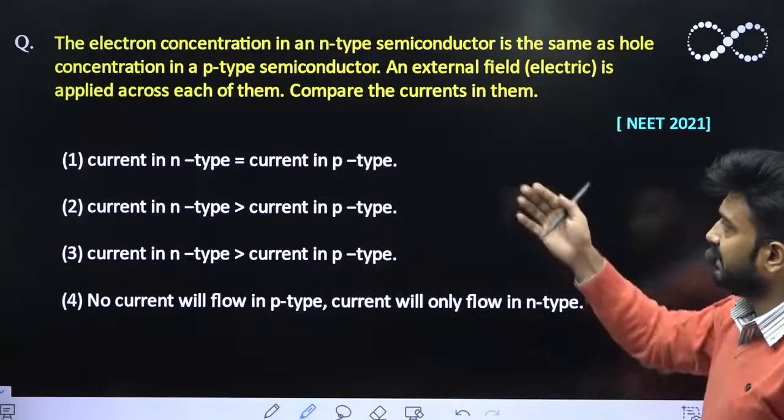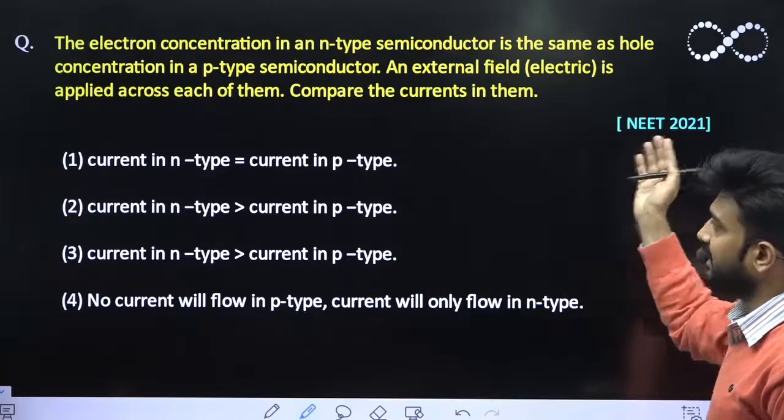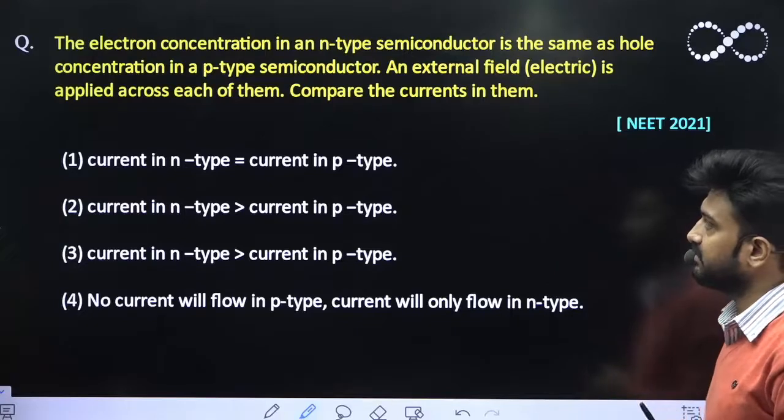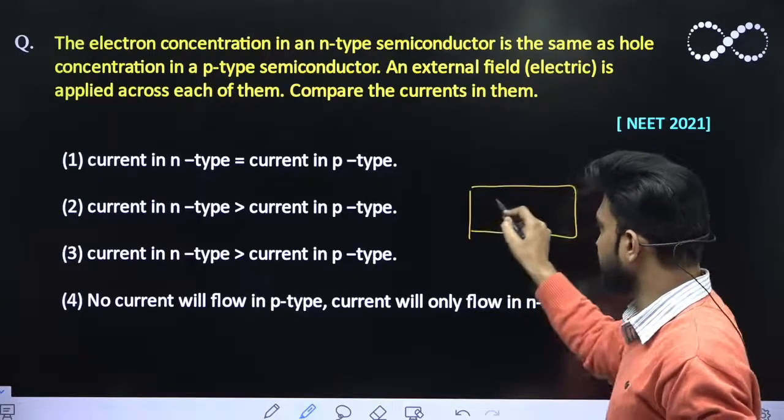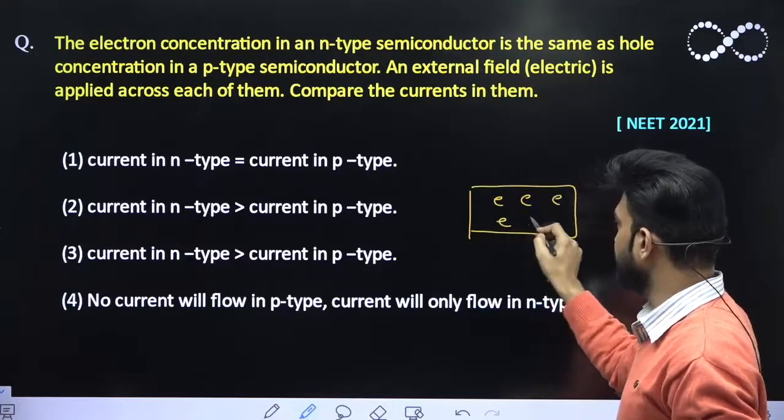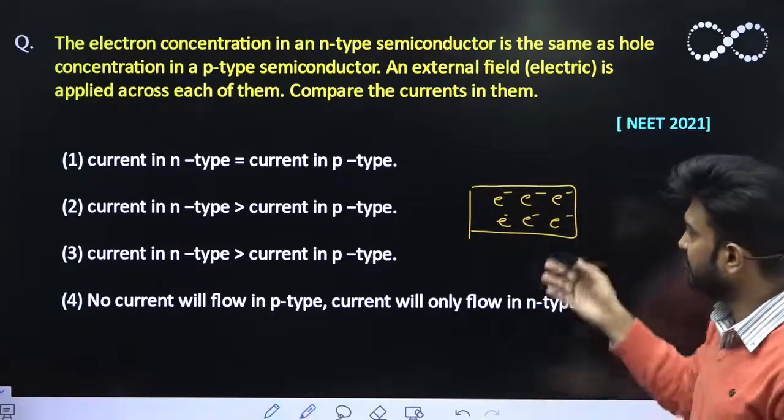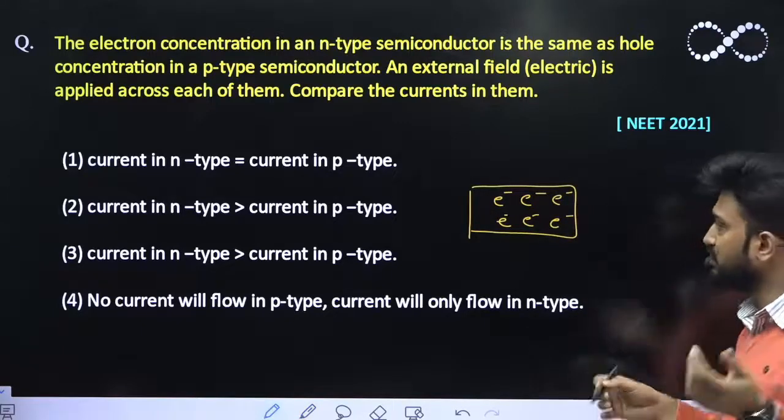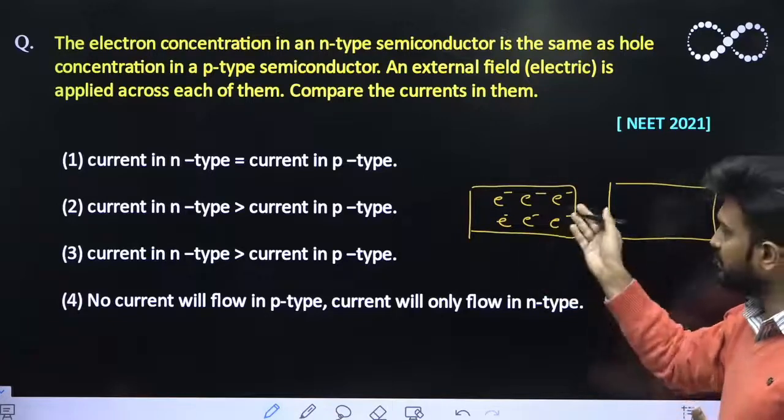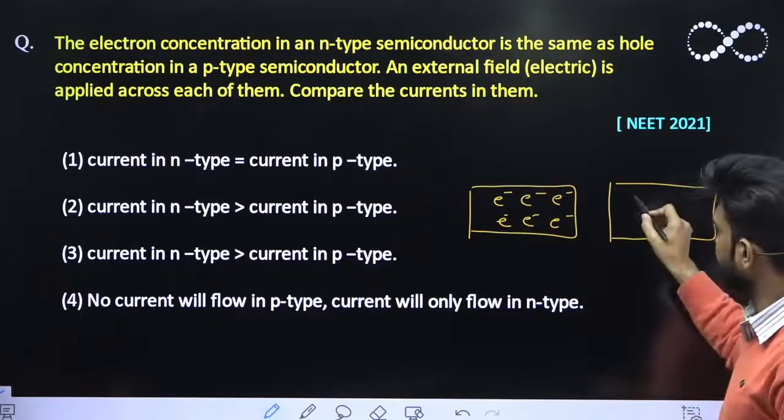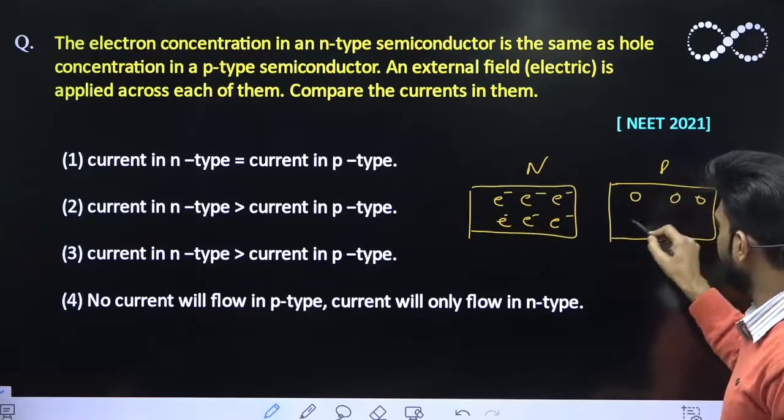Question says the electron concentration in an n-type semiconductor is the same as the hole concentration in the p-type semiconductor. Obviously you have been given an n-type semiconductor. So that means it must be having electrons because n-type semiconductor have more number of electrons which is free to move and in order to produce electricity.